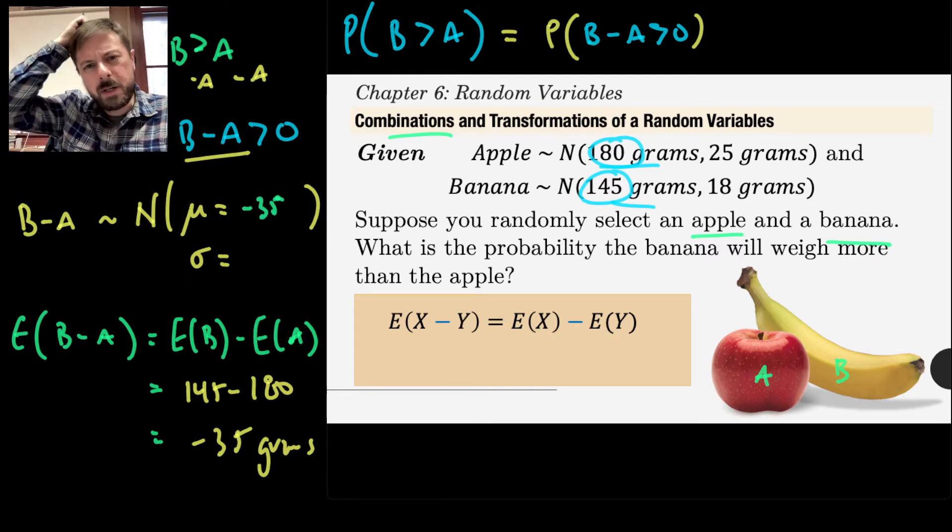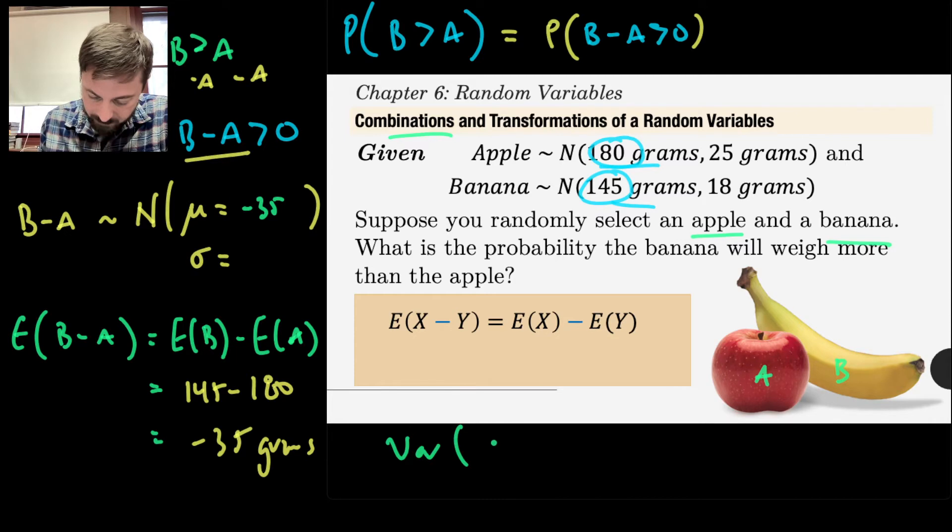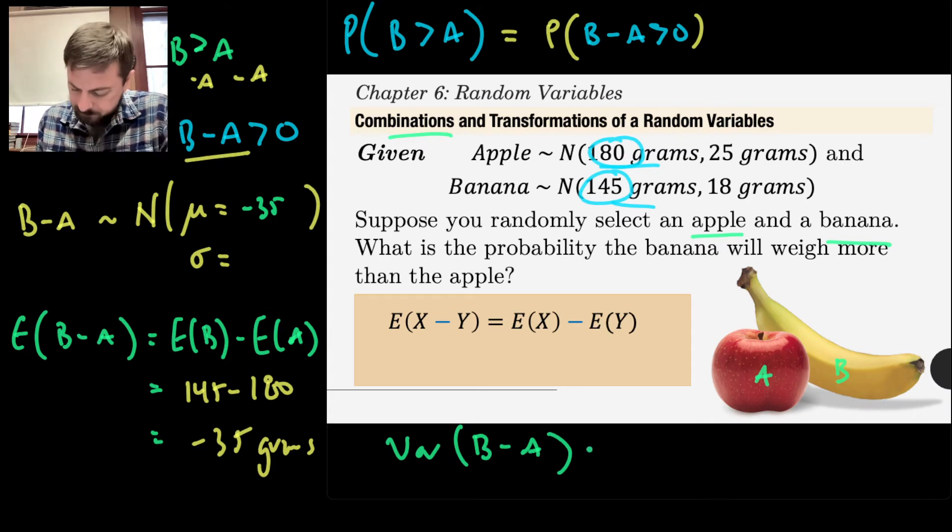Your intuition about the expected value, the difference between two random variables is correct. So in general, as a formula, if you have two independent random variables, X and Y, the expected value of their difference is the difference of their expected values. So that's great. We've got our one parameter at least. We have negative 35 for our mean. Now, a little bit trickier here will be our standard deviation.